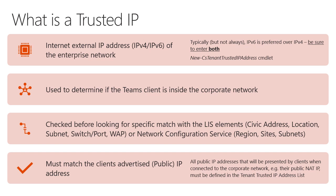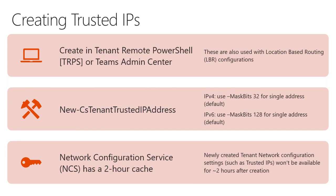Trusted IPs can be created in tenant remote PowerShell using the New-CsTenantTrustedIPAddress commandlet, or through the Teams admin center. Note that trusted IPs are not only used for dynamic emergency calling in Teams — they're also used for location-based routing (LBR) and direct routing media optimization components. So you may already have some configured if you're using LBR. The network configuration service has a two-hour cache, so newly created trusted IPs may take up to two hours to take effect.